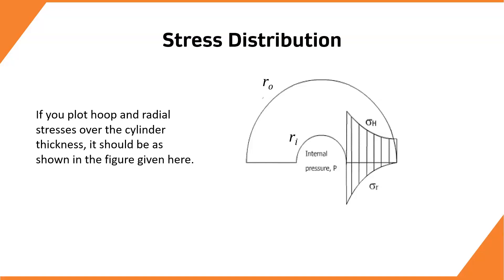If you plot the hoop and the radial stresses using these two equations over the cylinder thickness, it should be as shown in the figure. This also shows that the maximum hoop stress occurs at the inner surface.